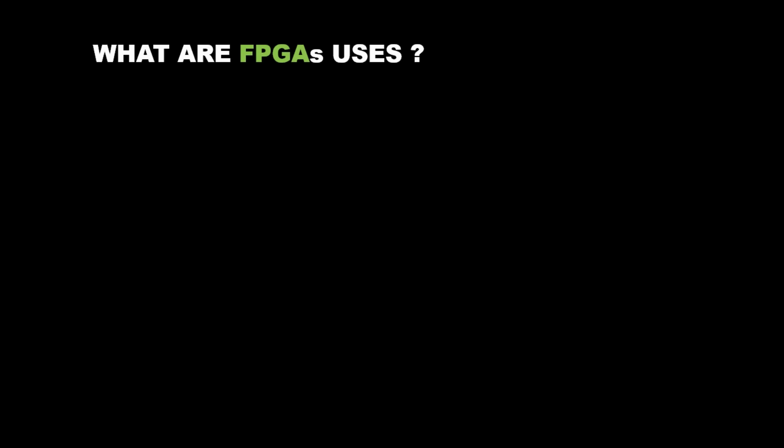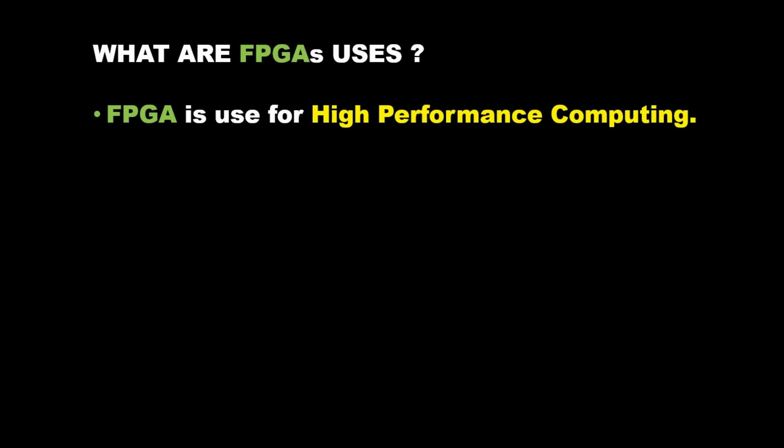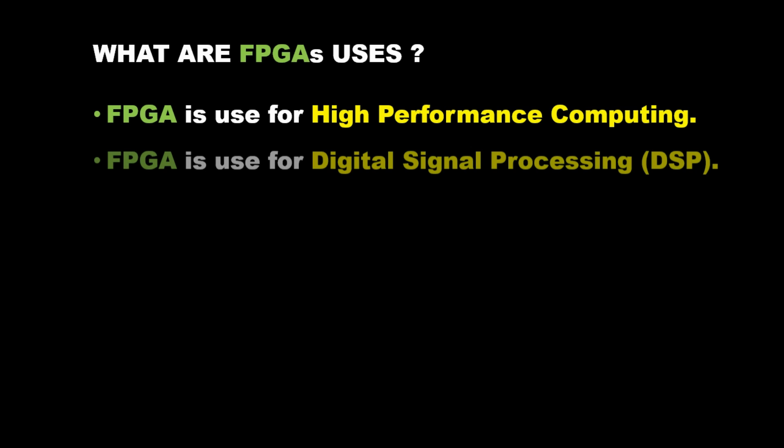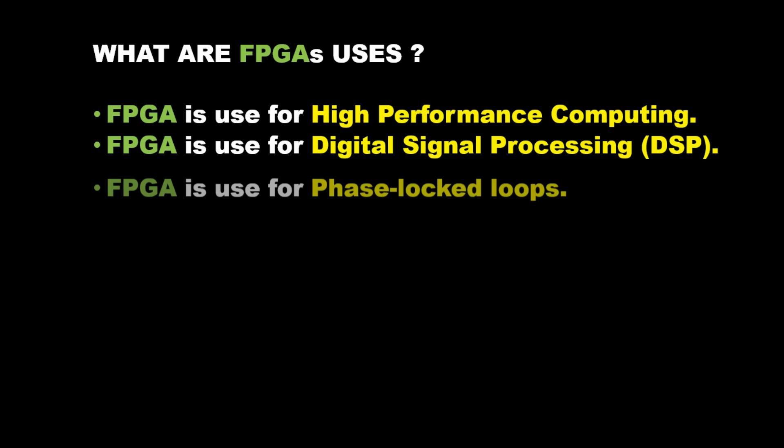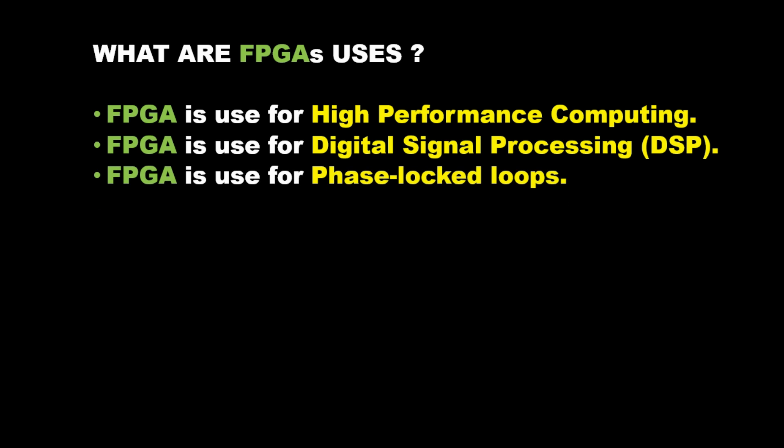What are FPGA's uses? FPGA is used for high performance computing, digital signal processing, and phase locked loops. FPGA is also used for routers.